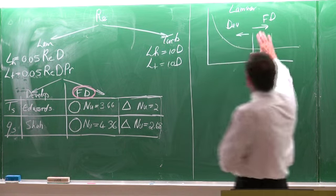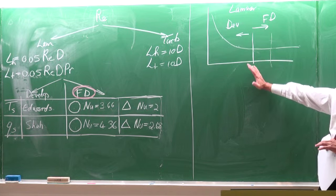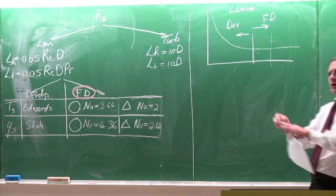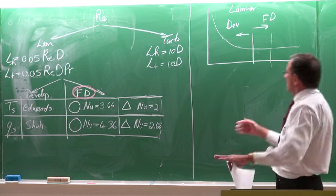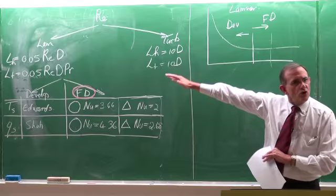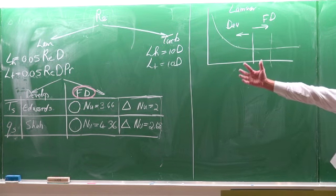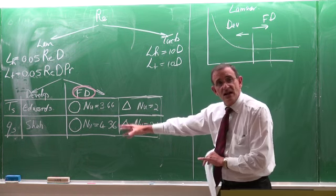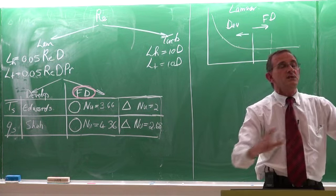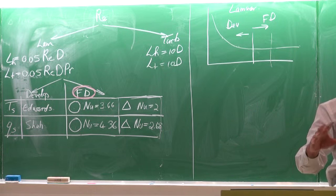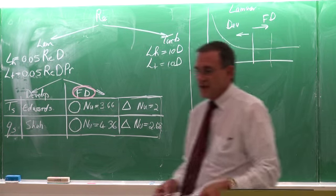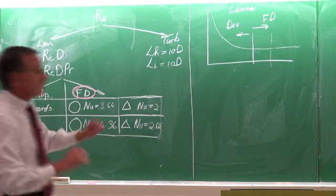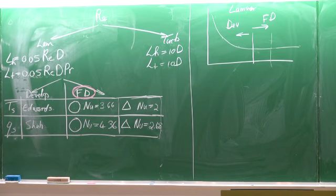With all problems, you have to use discretion — look at the problem, assess your length, and decide whether you can ignore the developing part or not. If you cannot ignore it, you need the correct equations, and the textbook is not complete by far; it only gives some of the most important ones. That in general is an overview of internal forced convection.